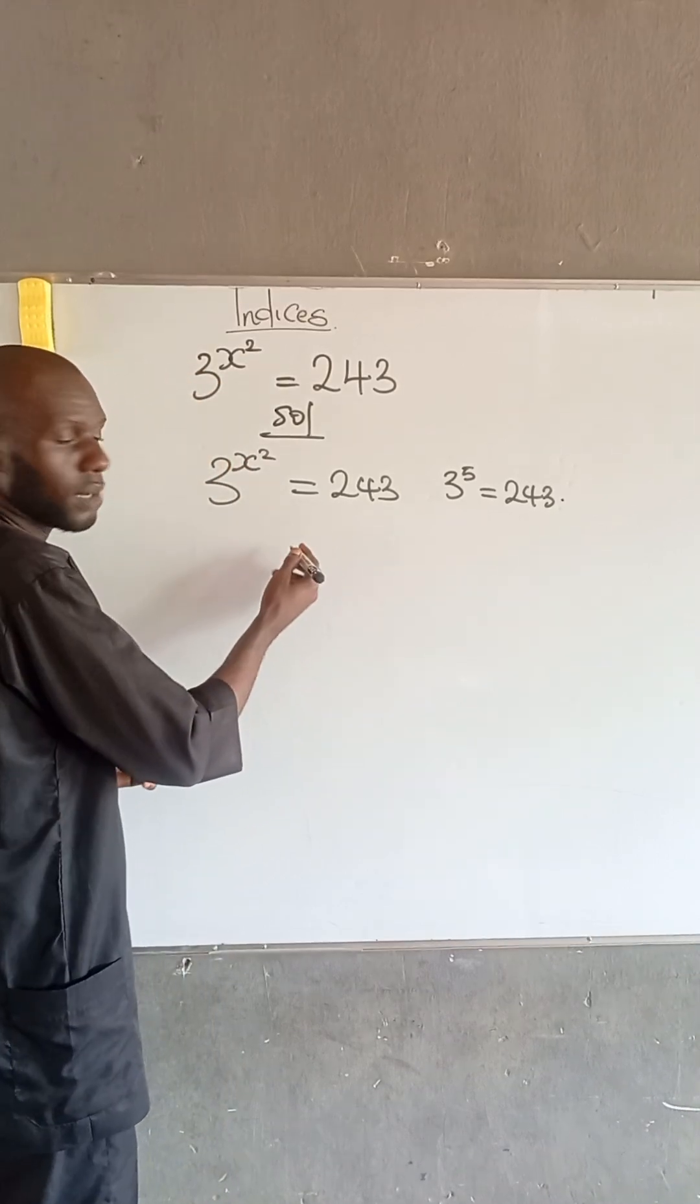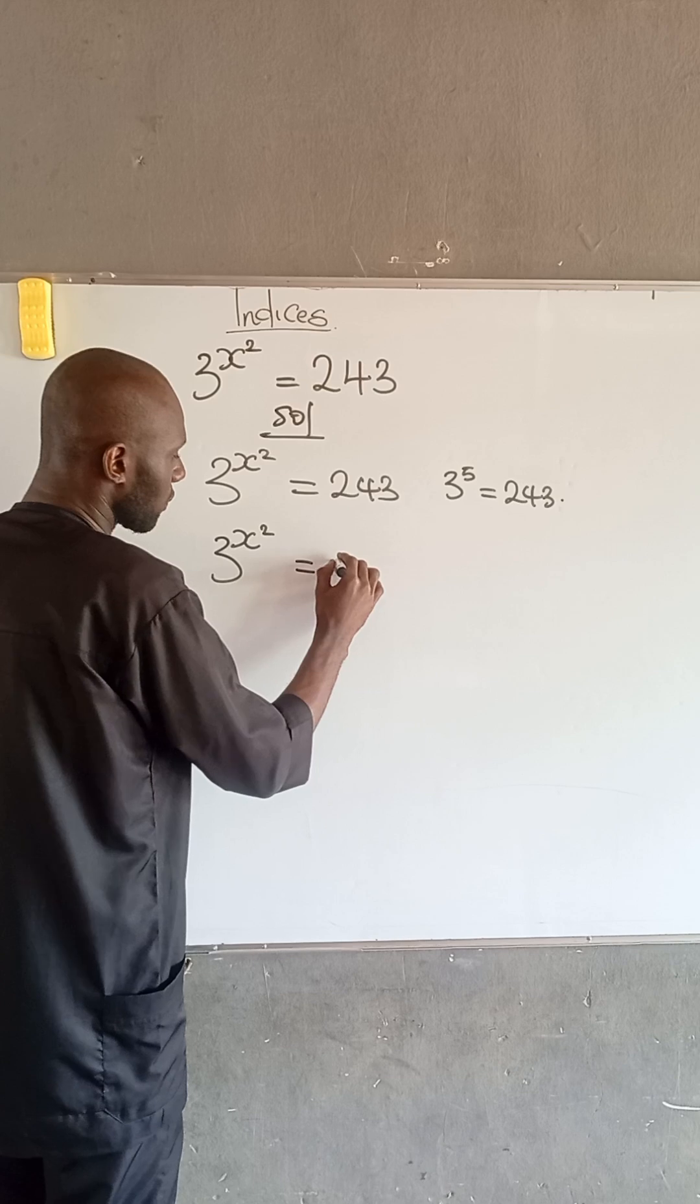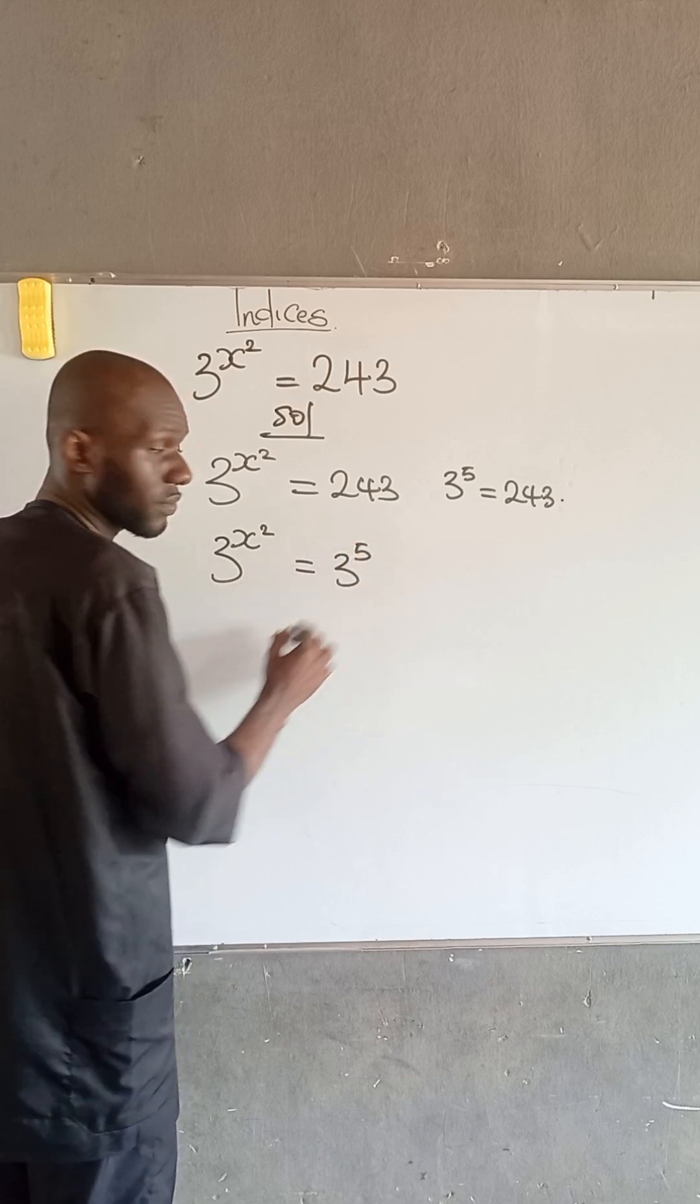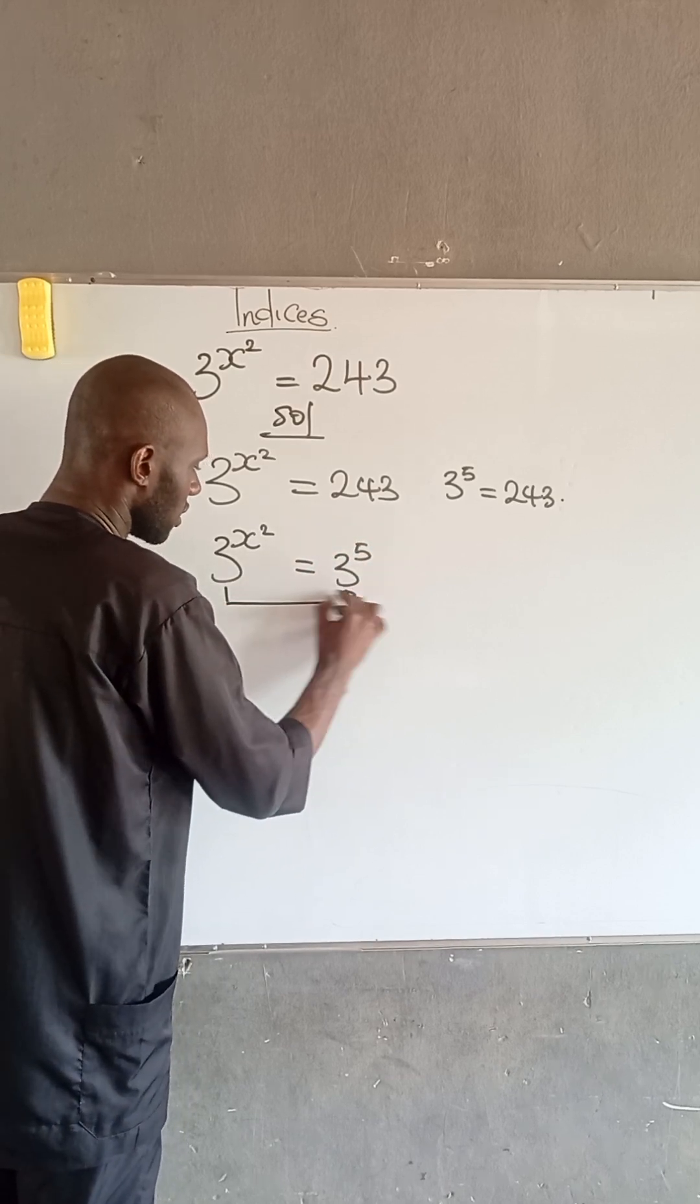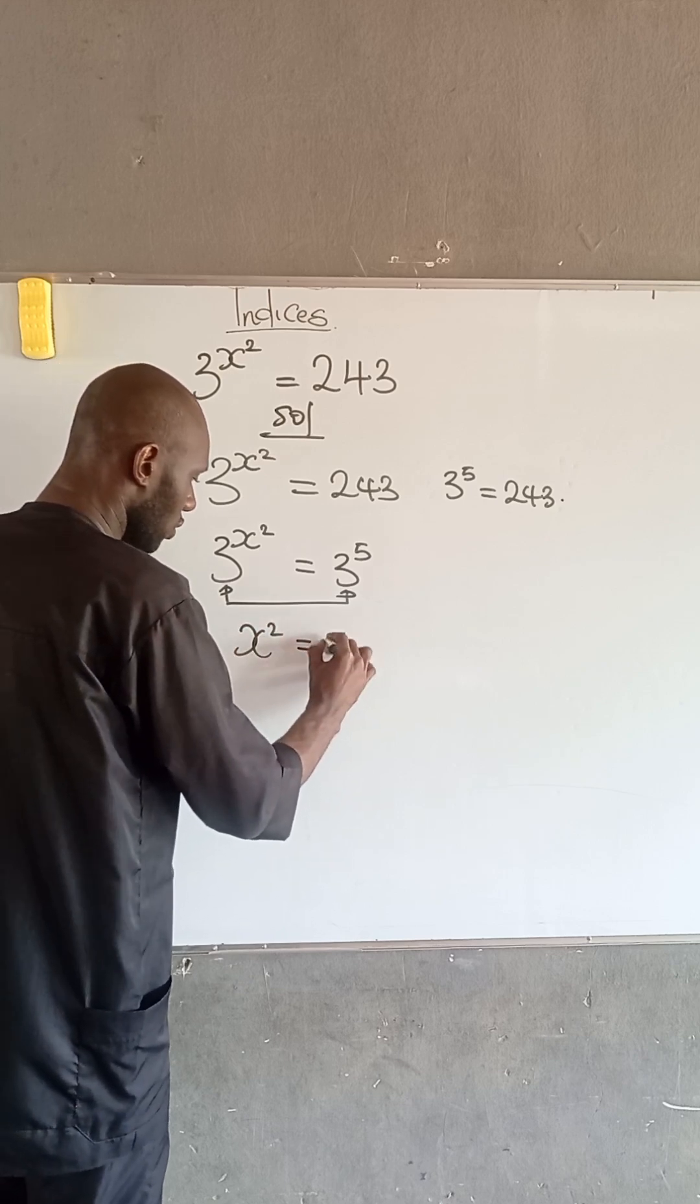So, therefore, the equation now becomes 3 to the power of x squared is equal to 3 to the power of 5. So, at this point, since their bases are the same, we have it that x squared is equal to 5.